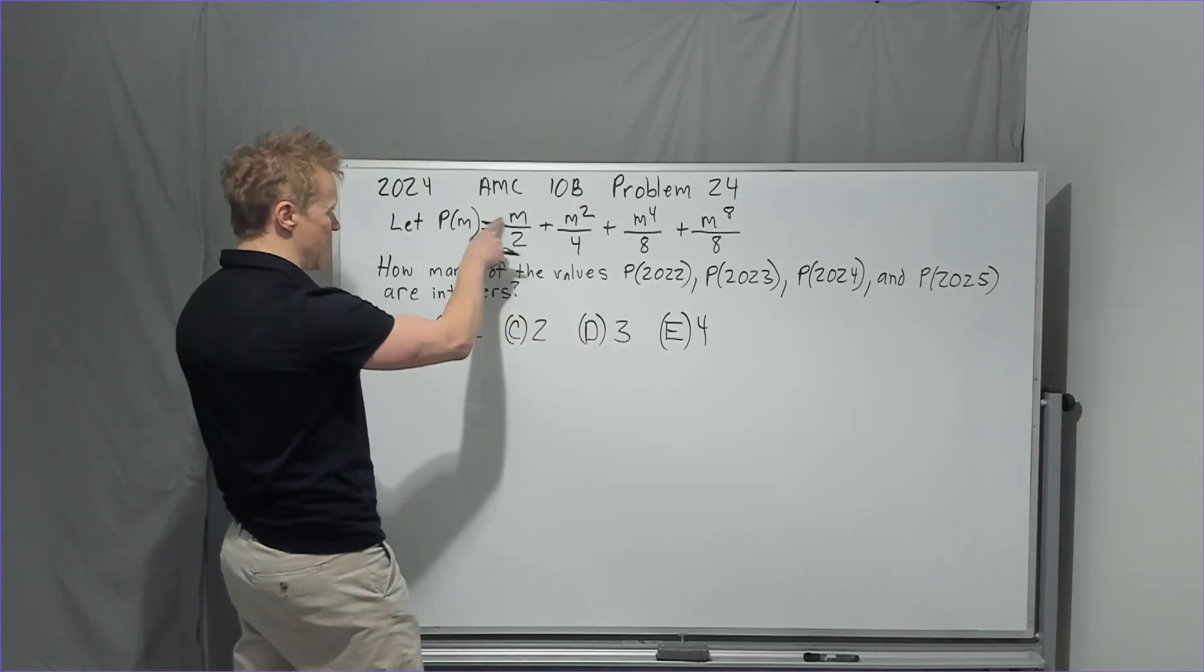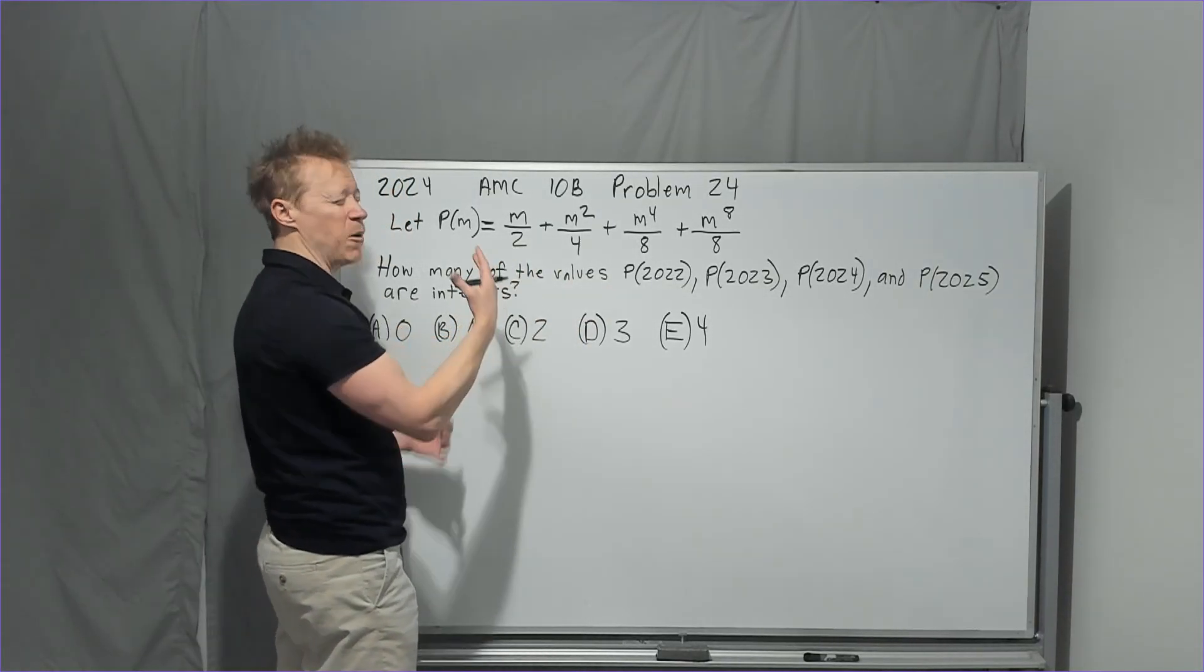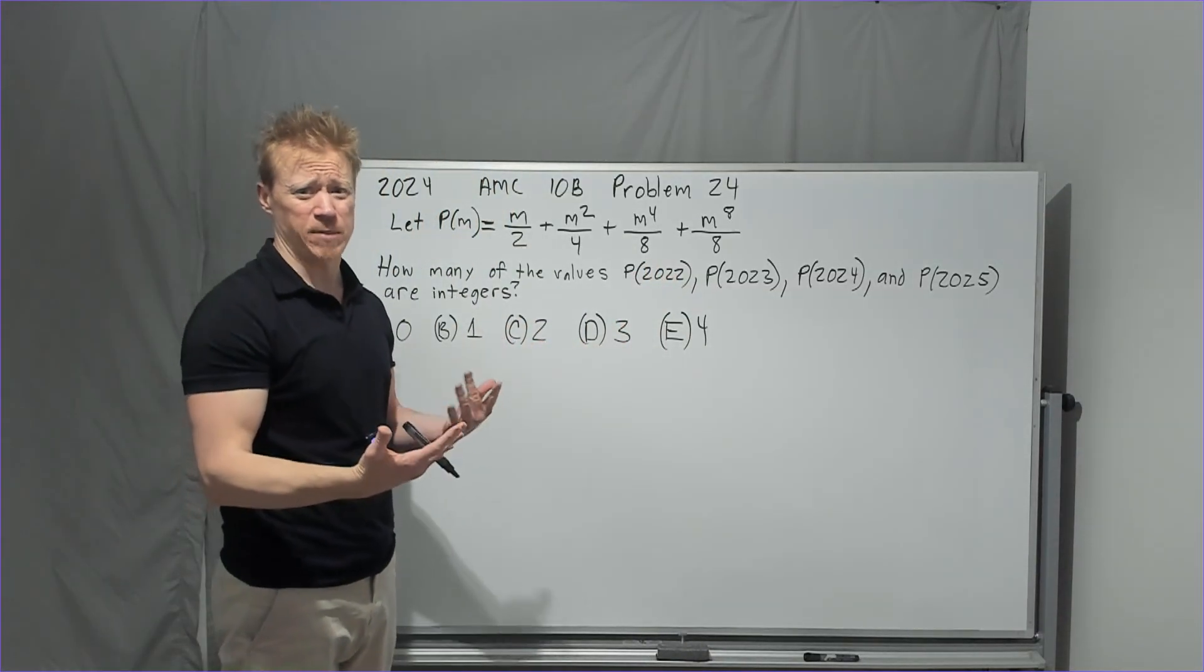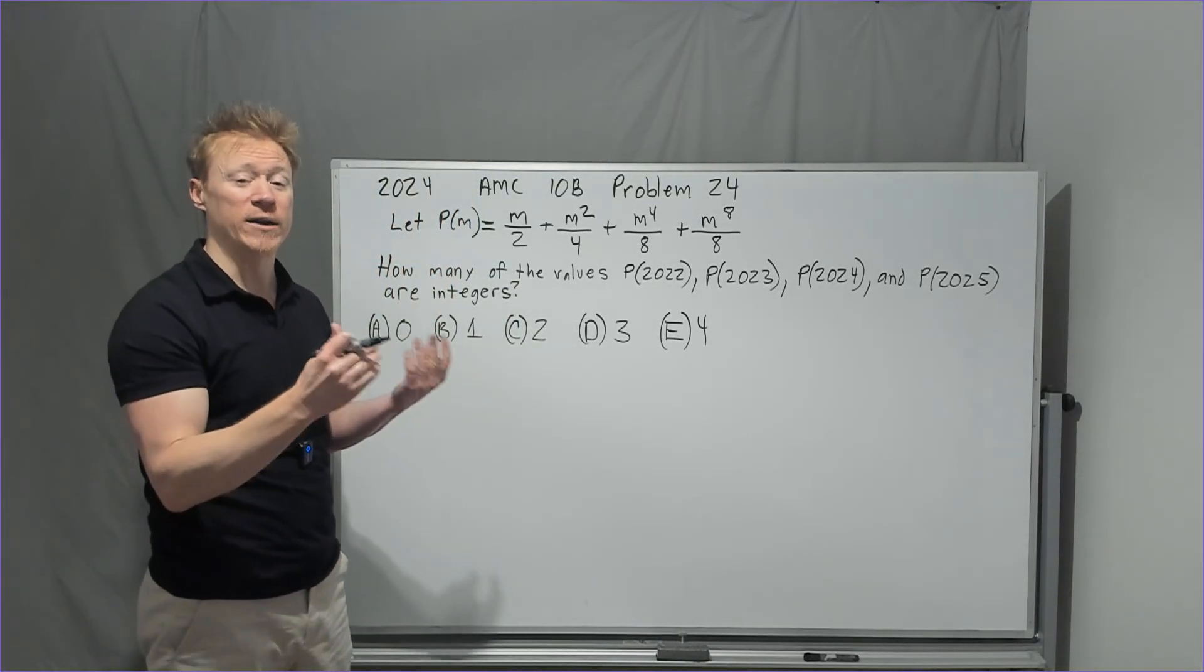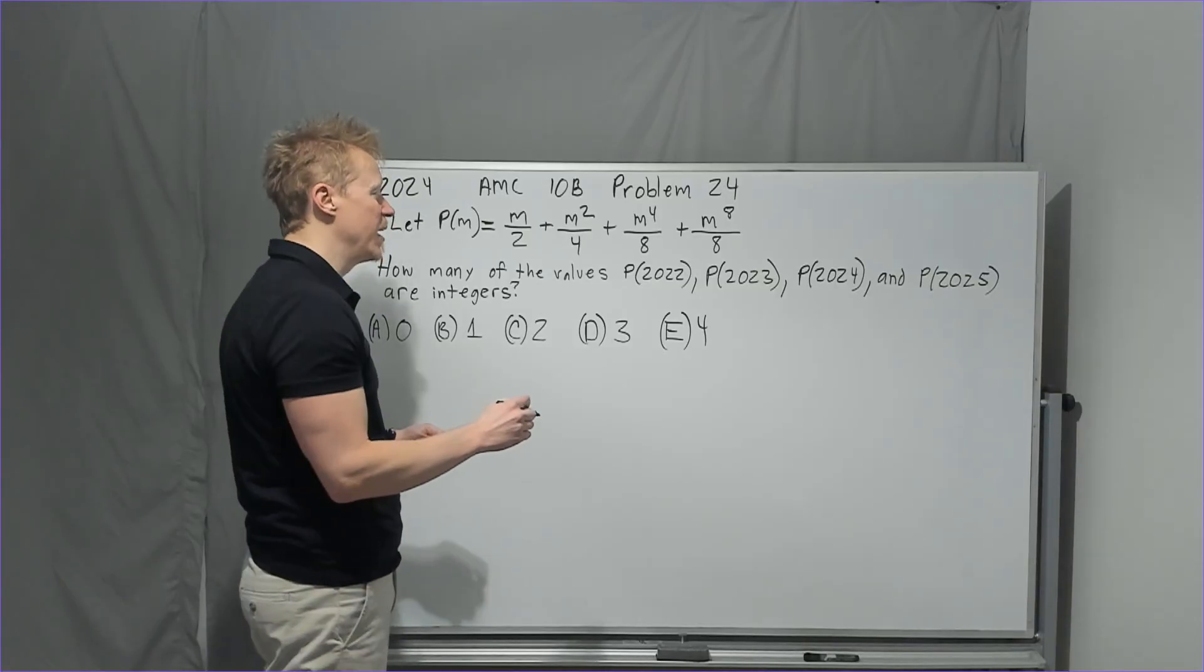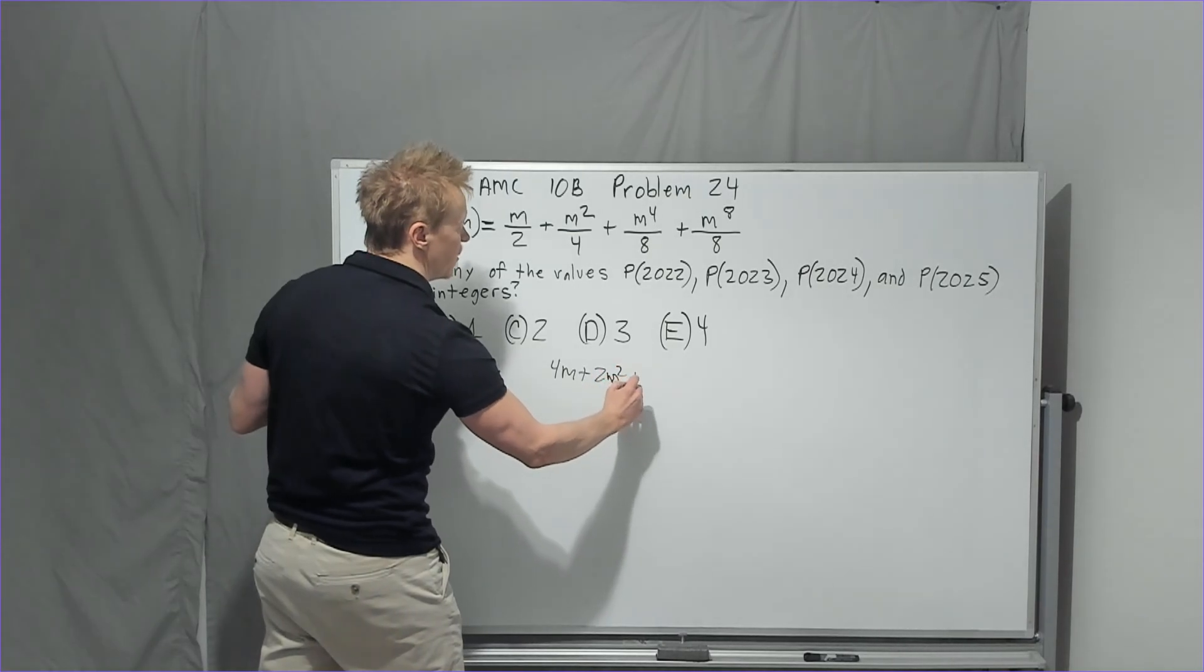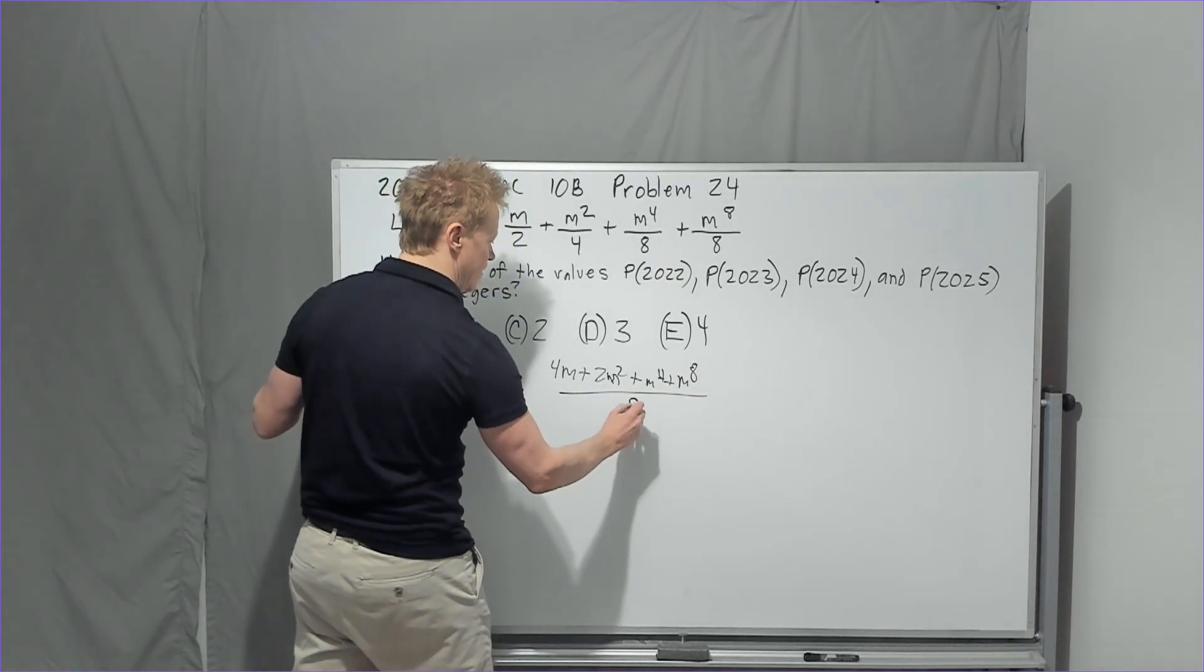The first thing is this M up here is just this number. So I'm going to look at this and go, what would be my first action? If I'm looking to show that this is an integer, then I would need all of these fractions when combined to be an integer. But this is four things to think about. Why don't I make one thing to think about? If we simply combine these into one fraction, that's probably the first step. This needs a four and a four. That needs a two and a two. You're then going to have 4M + 2M² + M⁴ + M⁸ over 8.